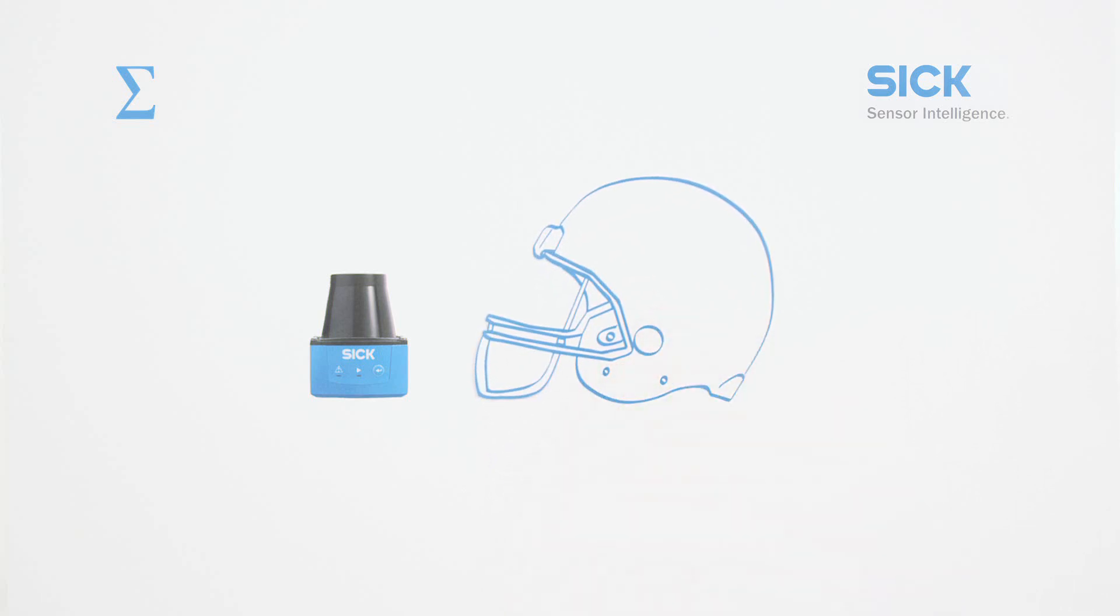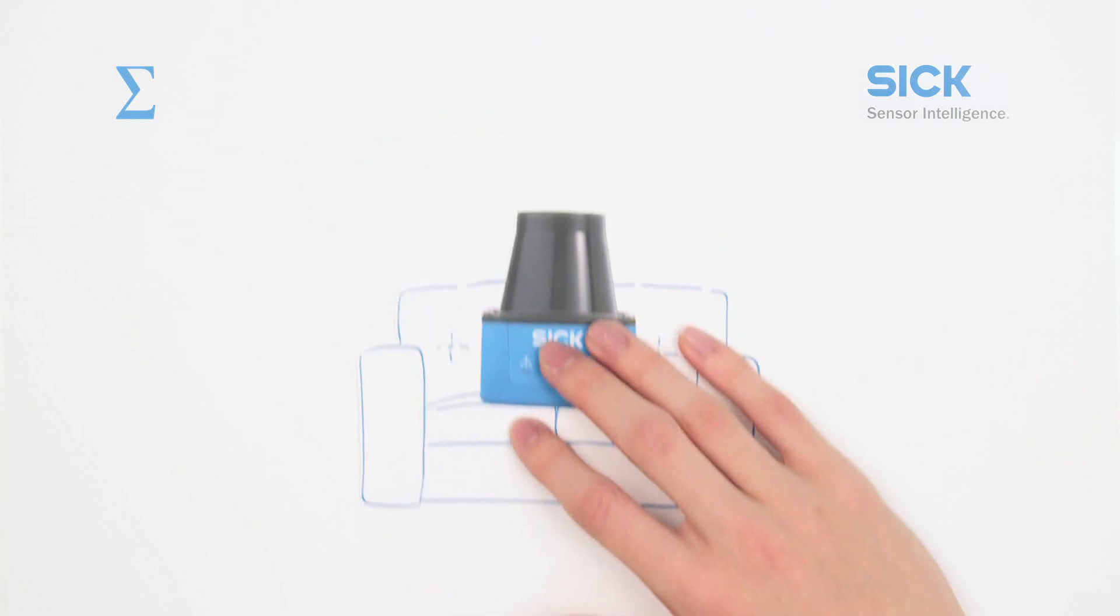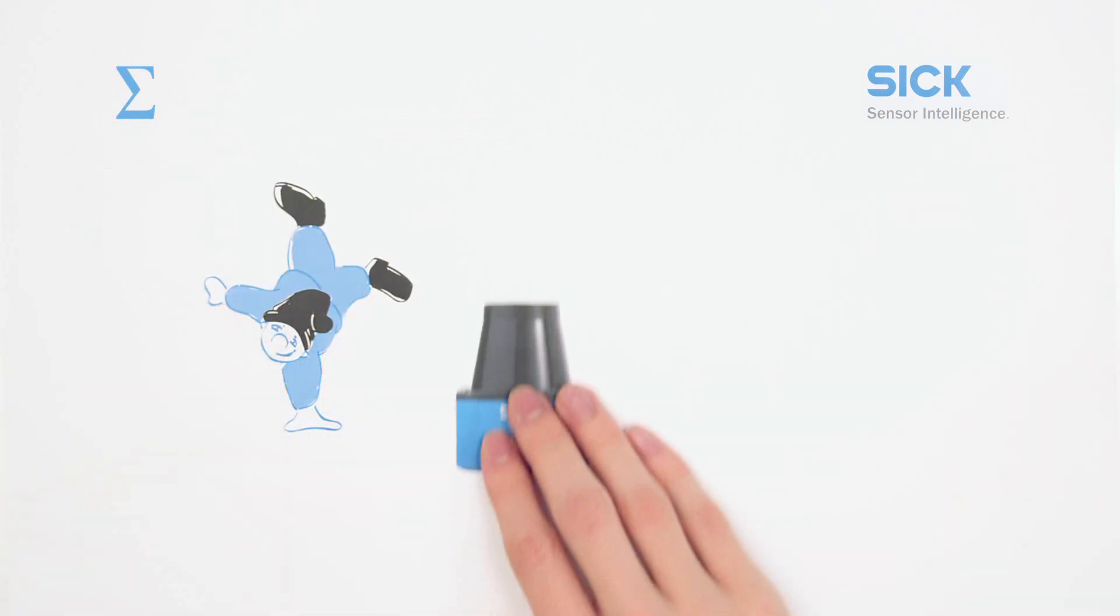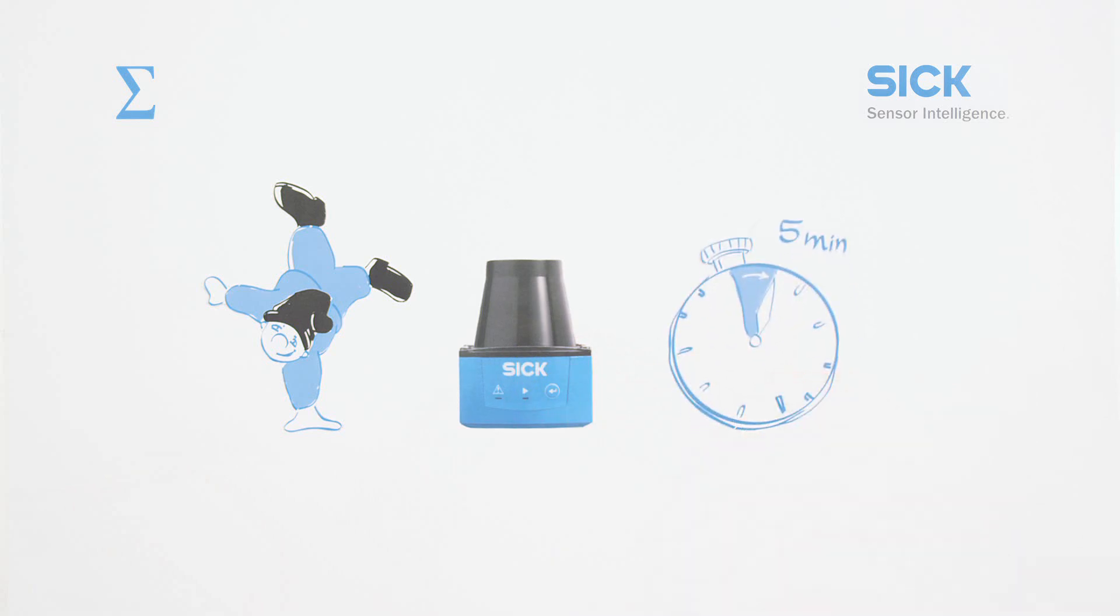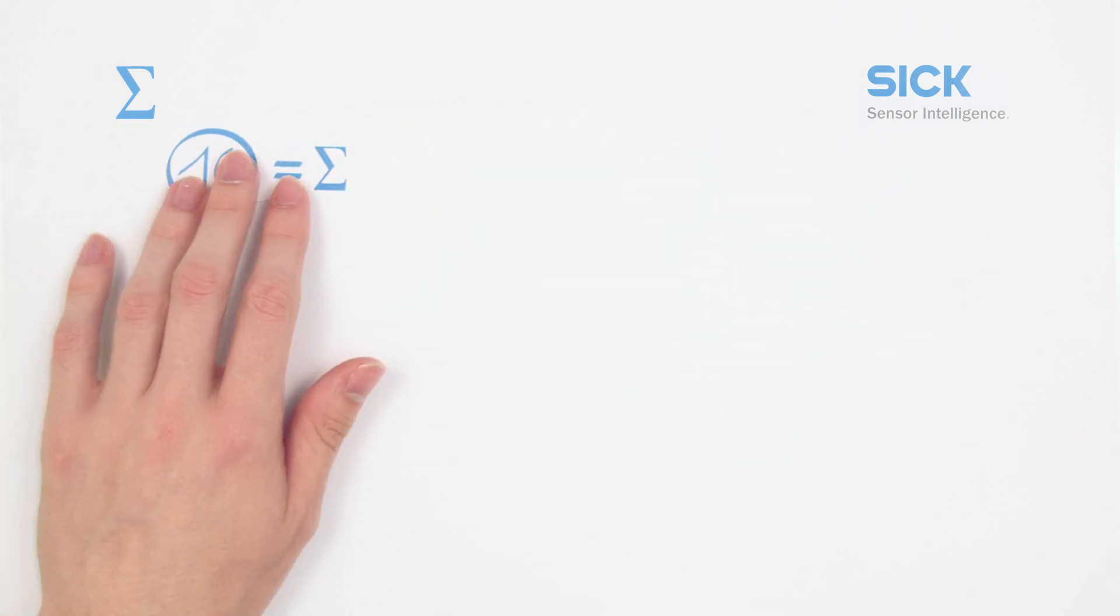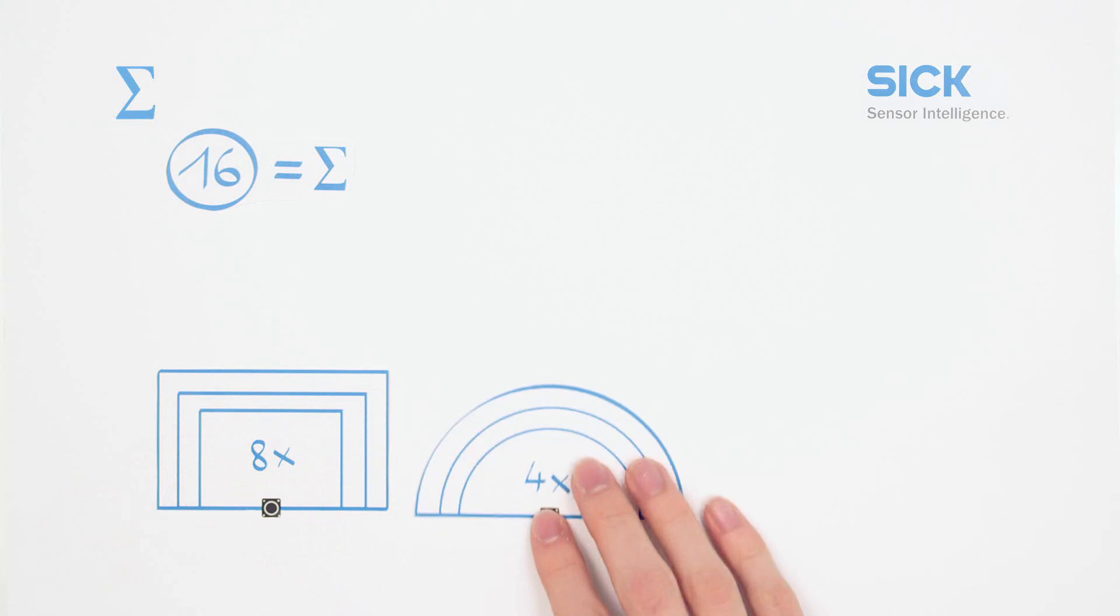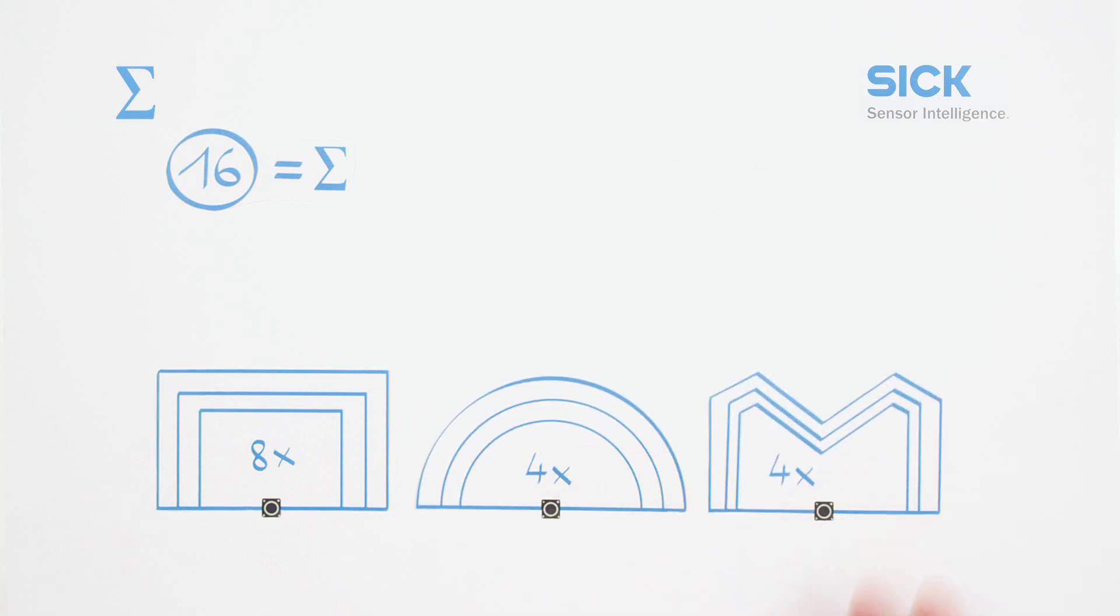So simple, Tim 300 is ready to go in 5 minutes. Up to 16 field sets in 3 different field shapes can be chosen easily and intuitively.